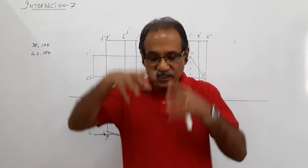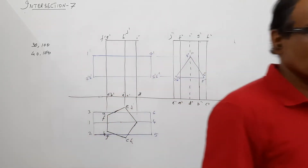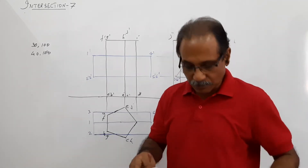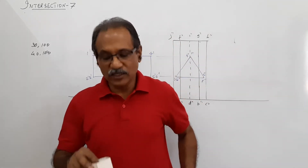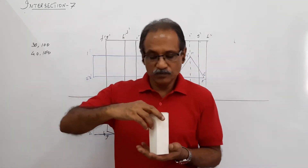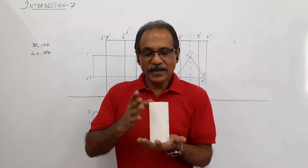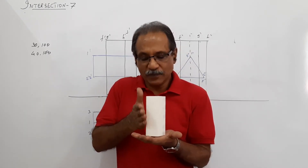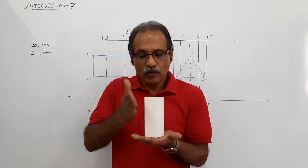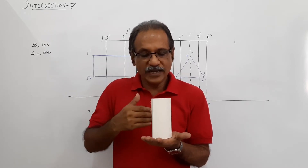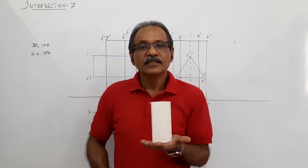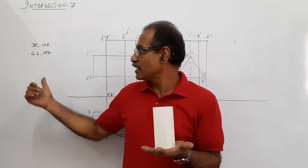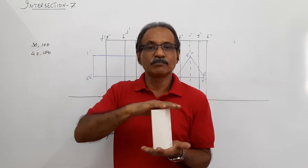A pentagonal prism is standing on its base on the ground, with one base side perpendicular to VP. This pentagonal prism has a side of 30 mm and a height of 100 mm.